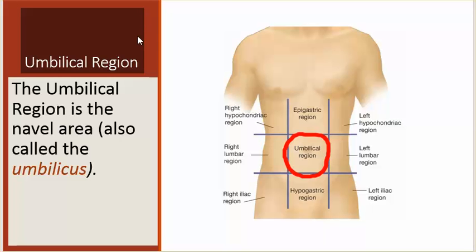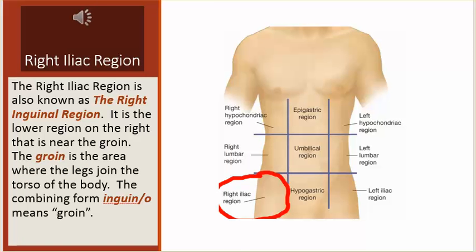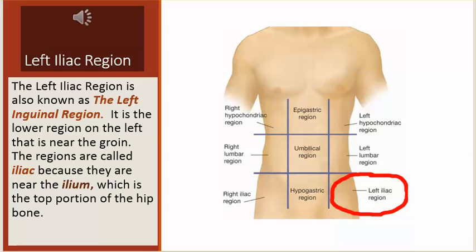The umbilical region is located in the center of the abdomen. The right iliac region is also known as the right inguinal region. It is the lower region on the right that is near the groin. The groin is the area where the legs join the torso of the body. The combining form inguinal means groin. The left iliac region is also known as the left inguinal region — it is the lower region on the left near the groin. The regions are called iliac because they are near the ilium, which is the top portion of the hip bone.